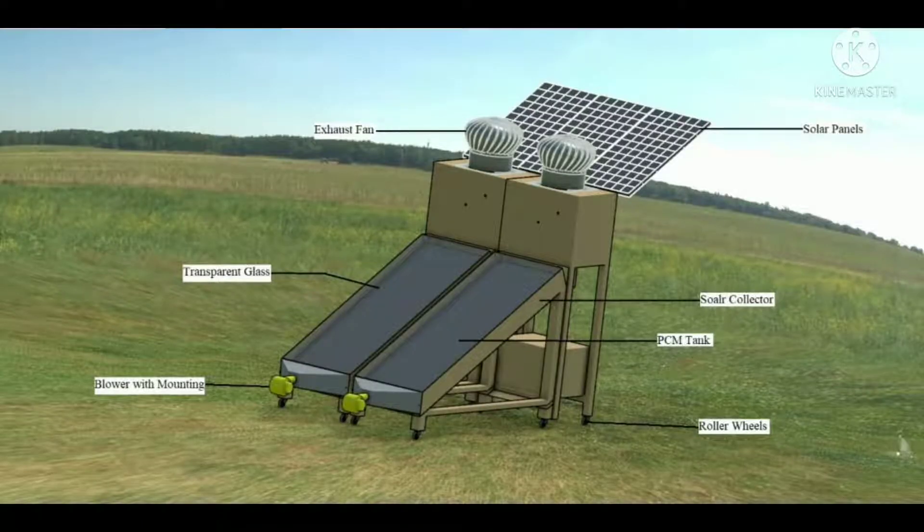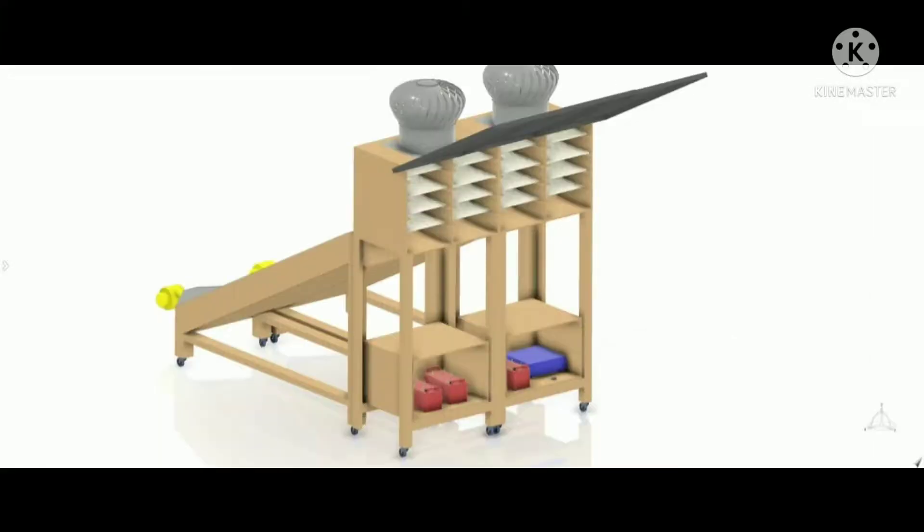We designed a hybrid solar dehydration system which uses a phase change material, paraffin wax, for energy storage at night time. This system can be used in rural as well as urban areas.